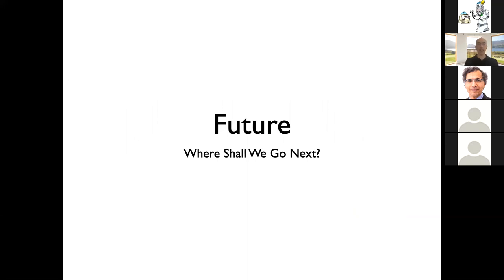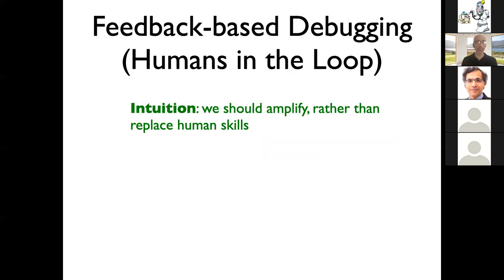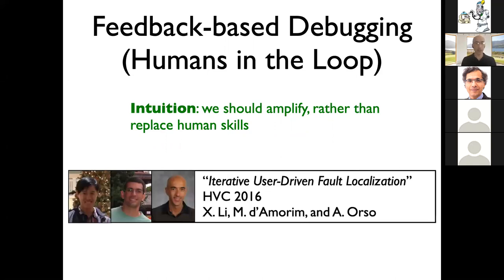That was the result that motivated us to start looking for alternative approaches. Going back to 10% of the program — if you need to look at 100 statements with 10 minutes per statement, that turns out to be quite a long and frustrating time. That's also why people give up when they start finding false positives. The first direction I want to discuss is feedback-based debugging, or 'humans in the loop.' The intuition is that we should amplify rather than replace human skills — there is no way to do debugging in a fully automated way; it's a human-intensive task.